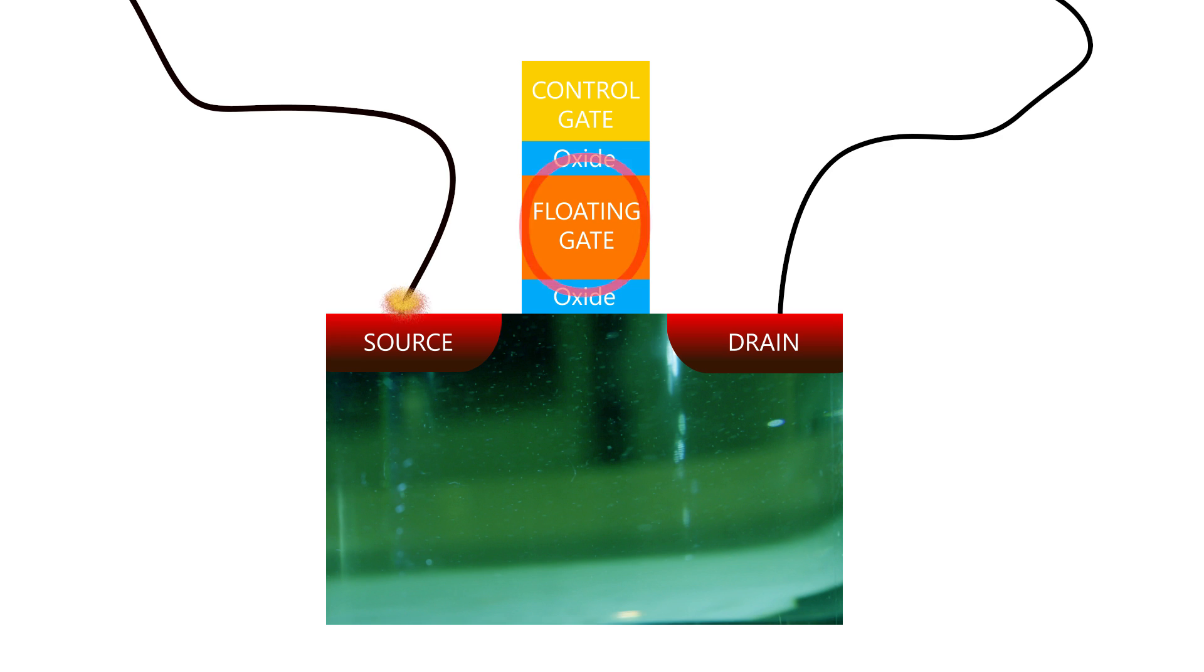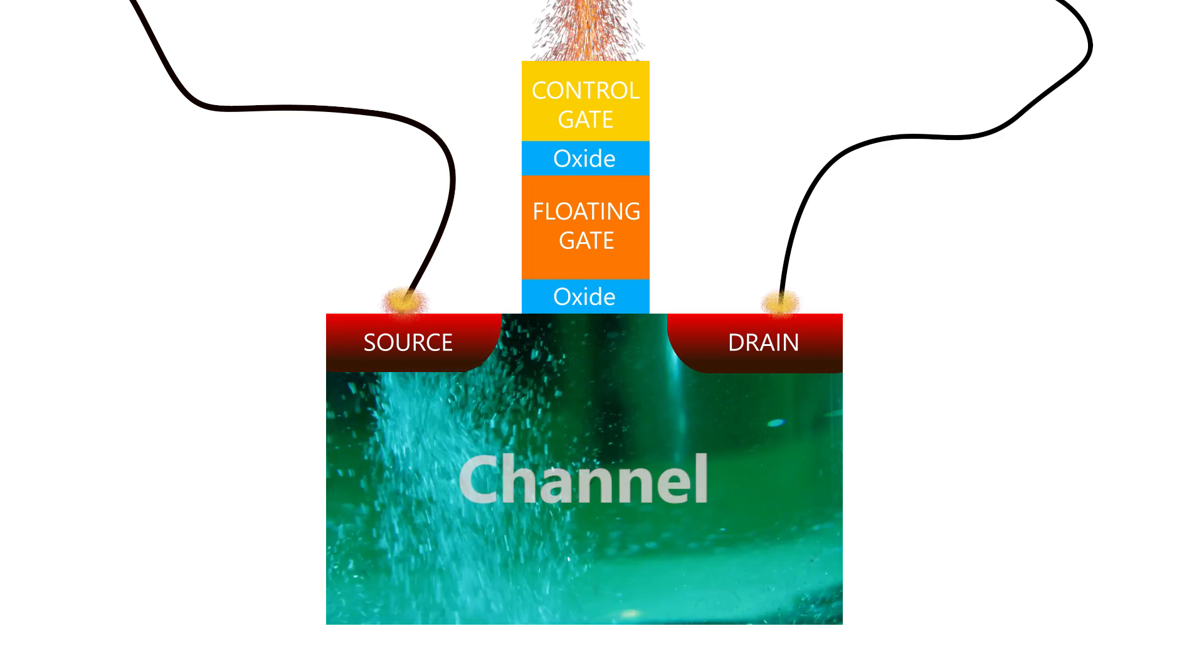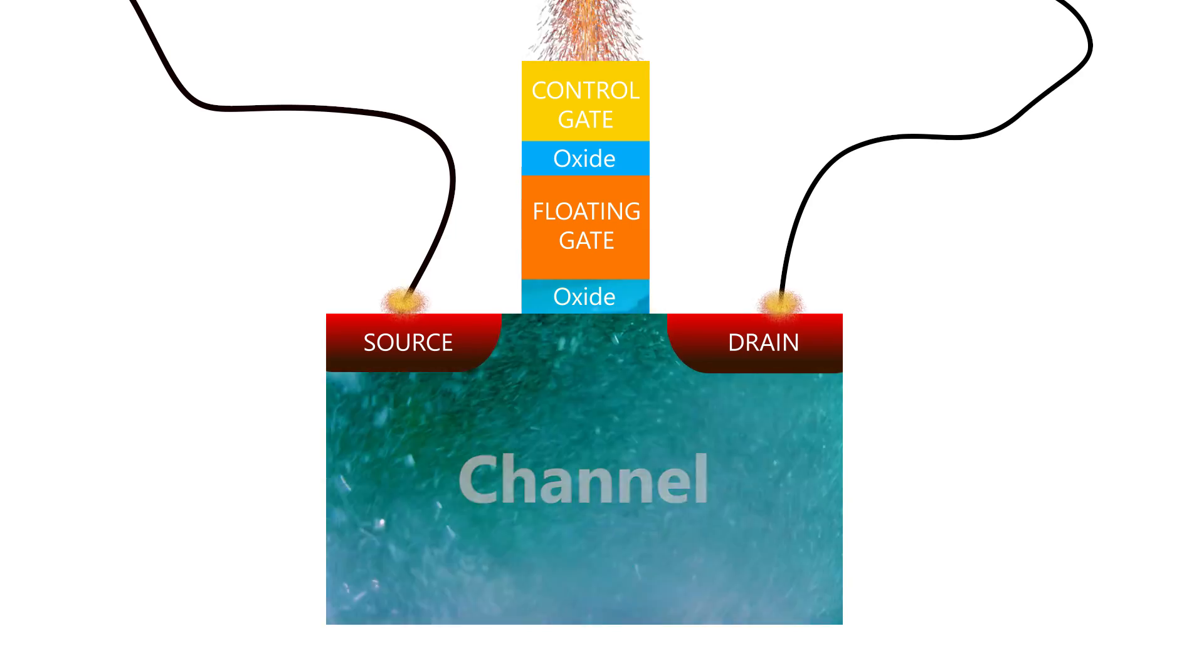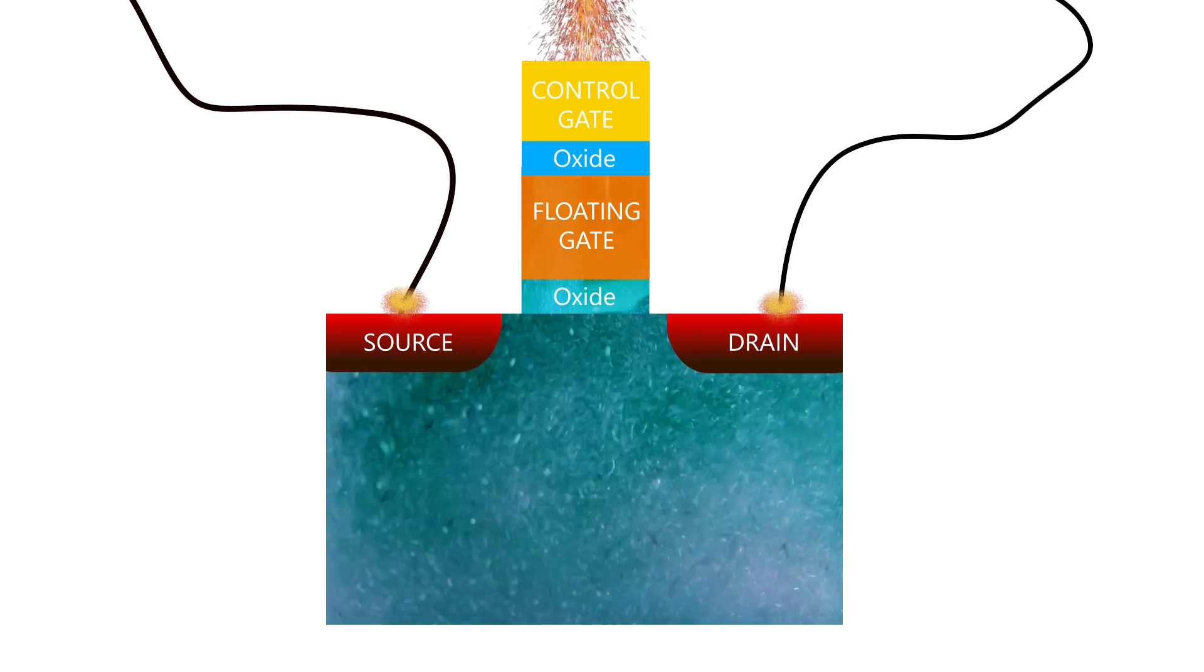Now, when a very high voltage is applied to the control gate, electrons flowing through this channel have a tendency to break through the oxide layer and get trapped in the floating gate.